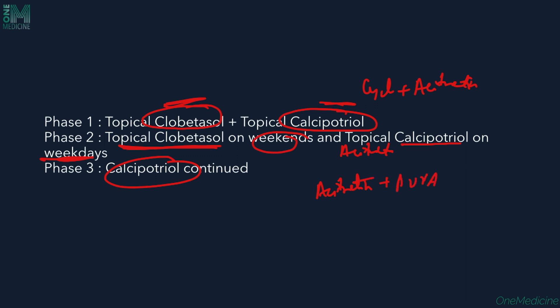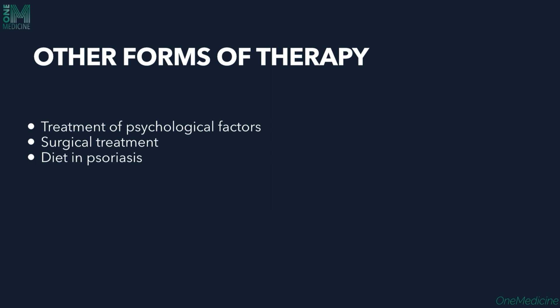Other forms of therapy include treating psychological factors through counseling, since the lesions are visibly troublesome to the patient. Surgical treatments for large plaques include debridement, curettage, and electrodesiccation. Dietary modifications include a gluten-free diet, which is said to reduce psoriasis incidence, and inclusion of omega-3 fatty acids. These are the treatment modalities of psoriasis.